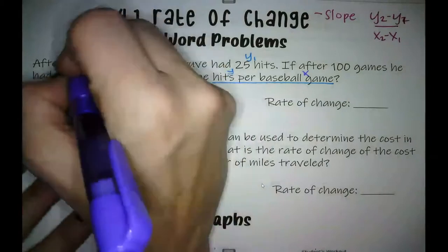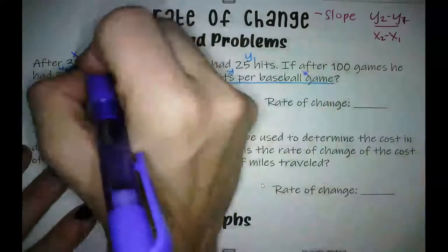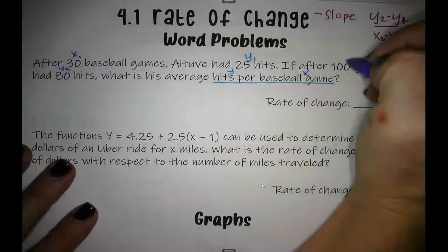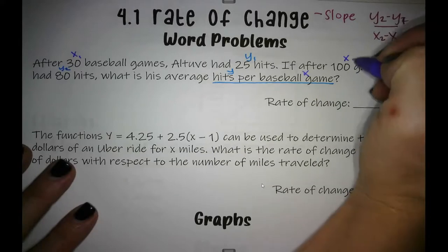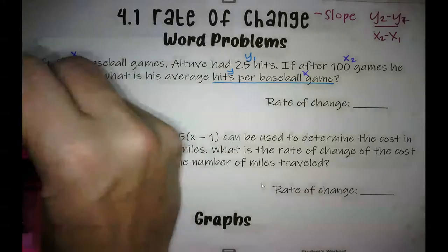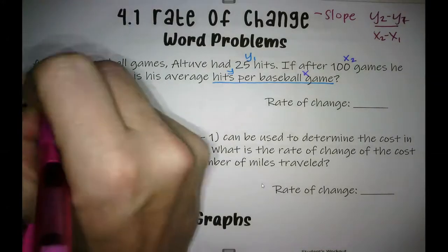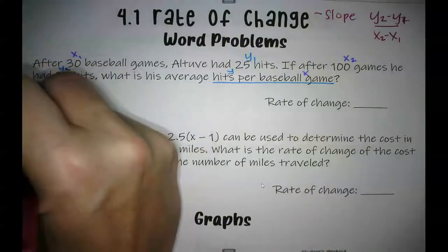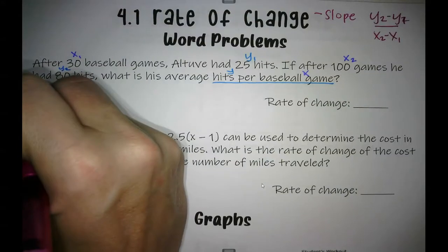So 30 games goes with the 25 hits, so that's X1. 100 games goes with our Y2. So let me write out those. We've got 30, 25, 100, and 80.